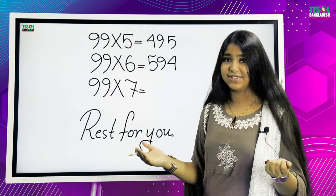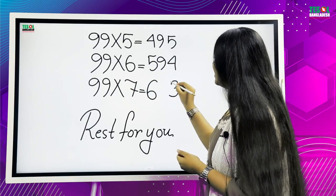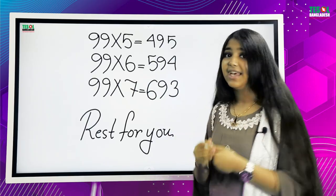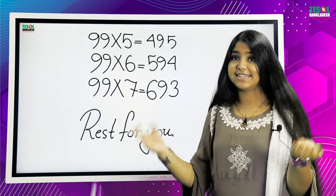99 times 7: 9 times 7 equals 63. We write 63. And in the middle, we put the second 9. The rest is for you. Thank you so much for the first trick. Now, let's move on to the second trick.